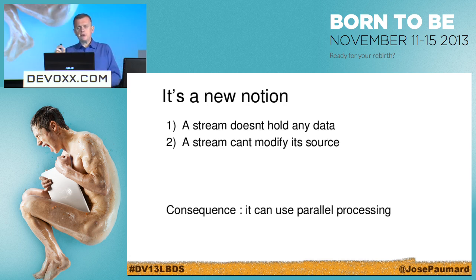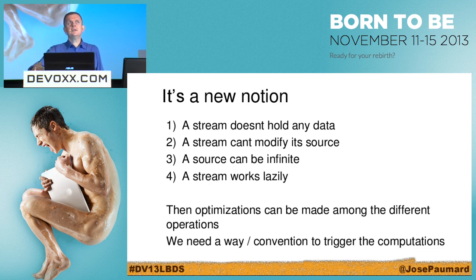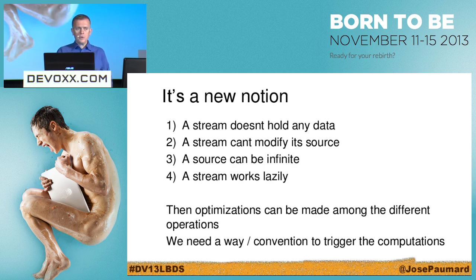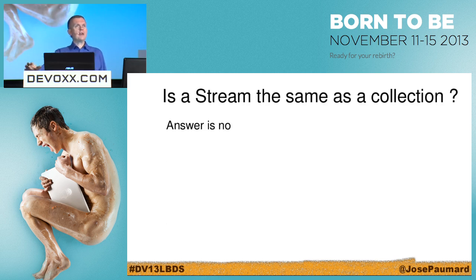Third, the source can be infinite, so I need a way to guarantee that computations will be conducted in finite time. A stream works lazily — this is very important. You may remember before the pause I showed an example where laziness was really needed to bring optimization. Streams inherently work lazily, which allows this kind of optimization. I still need a way to trigger the computation, because if it works lazily I still need to compute things at the end of the day.